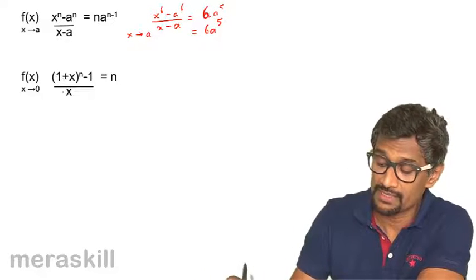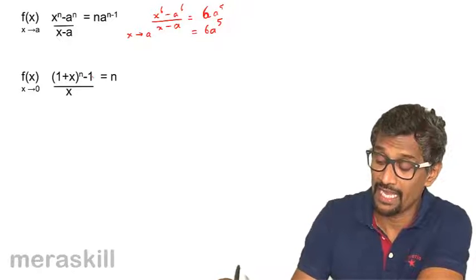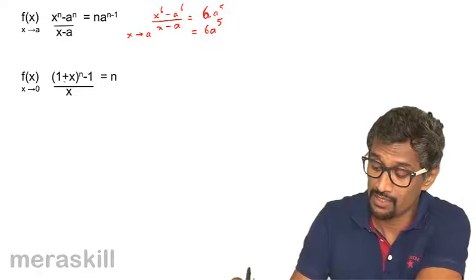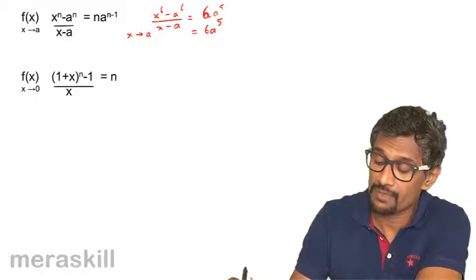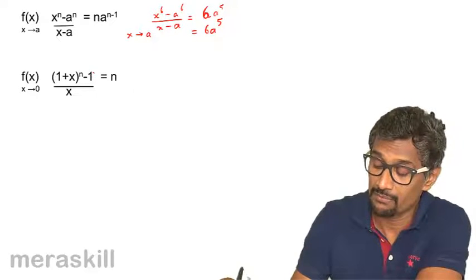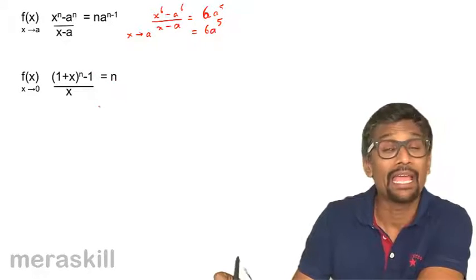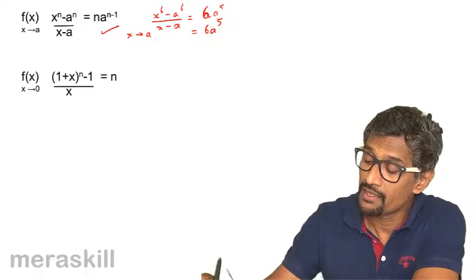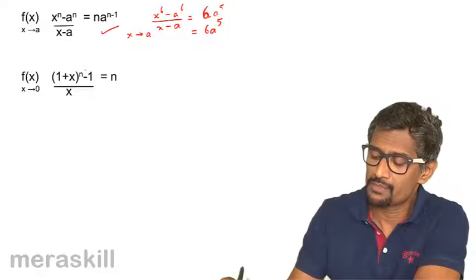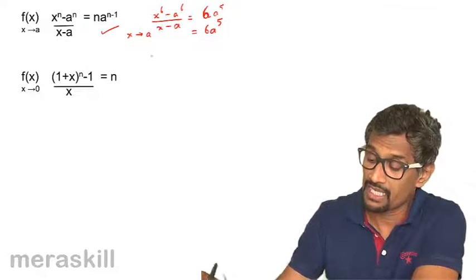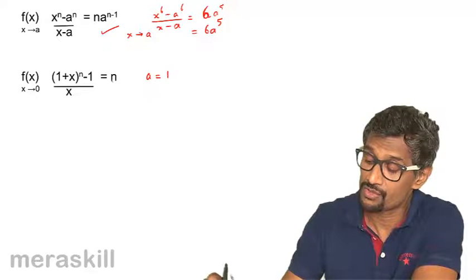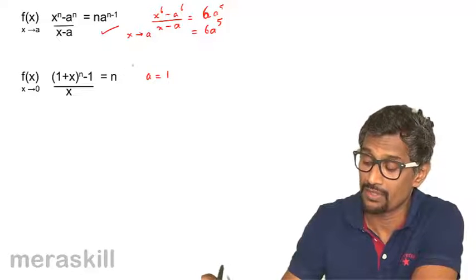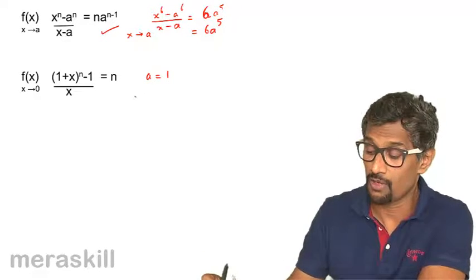An offshoot of this formula is obtained by taking a = 1. Since 1 can be written as 1^n, the expression (1 + x)^n - 1 reduces to n × a^(n-1), which becomes n × 1^(n-1) = n × 1 = n. Any power of 1 is 1, so this is simply an offshoot of the main formula with a = 1.